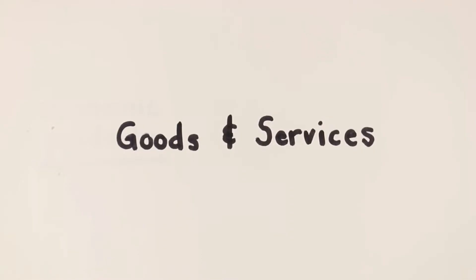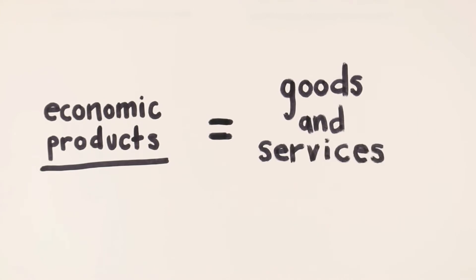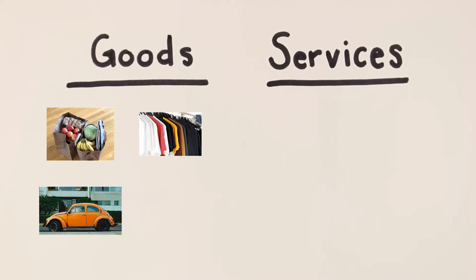Now we will discuss goods and services. Both macroeconomics and microeconomics deal with economic products, which we call goods and services. Goods are tangible products, such as food, clothes, cars, and computers.